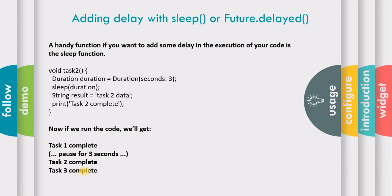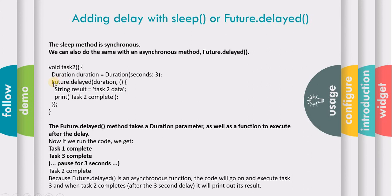We can do the same with the asynchronous method future.delayed. Instead of the sleep method, we use future.delayed, passing our duration of three seconds and a second parameter which is a function that prints task two complete. When we run this code, we get task one complete, then task three complete, and after that task two complete, because future.delayed is an asynchronous function that lets code continue executing.